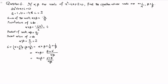Now we have the values of alpha plus beta and alpha beta, so we insert them into the equation. S equals alpha plus beta plus (alpha plus beta) over alpha beta, which is 4 plus 4 divided by 2. So 4 divided by 2 is 2, and 2 plus 4 is 6. Therefore the sum of the roots of the required quadratic equation is 6.